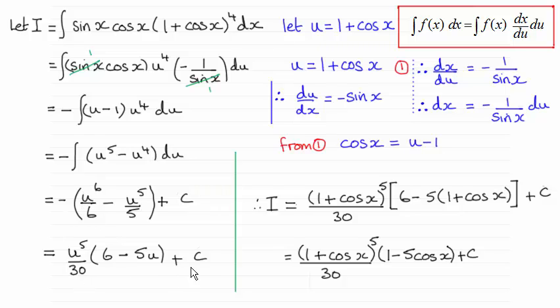OK, so then we've got here, I've just substituted back for u. So we've got 1 plus cos x to the power of 5 over 30, and then 6 minus 5 times u, u being 1 plus cos x. Expand the bracket here, and just clean up the two terms. 6 minus 5, giving me the 1 there. OK, so I hope that's given you an idea then, how to do that one.